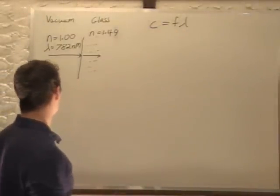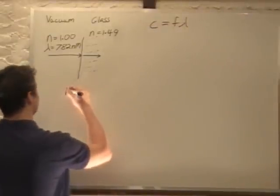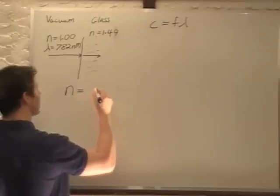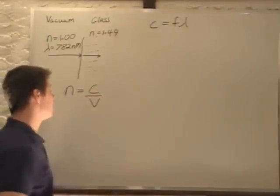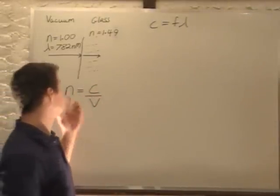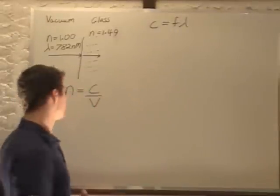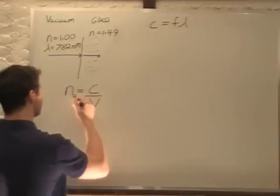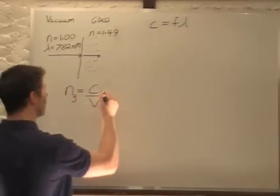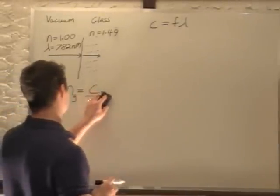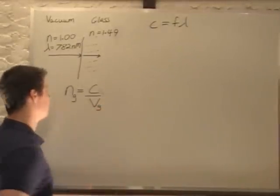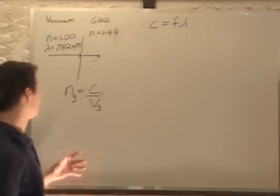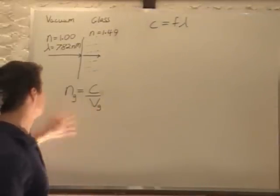We know that n, the index of refraction, is equal to c divided by the velocity of light in whatever medium you're in. So we can say n for glass equals c, the speed of light constant, divided by v in the glass. We can find the velocity in the glass given our index of refraction.